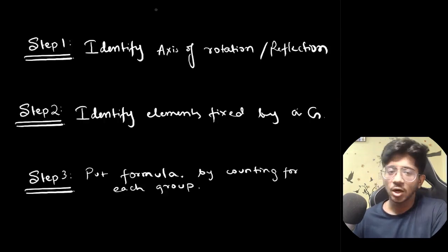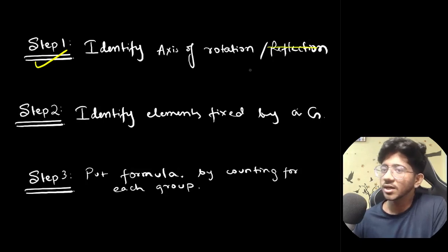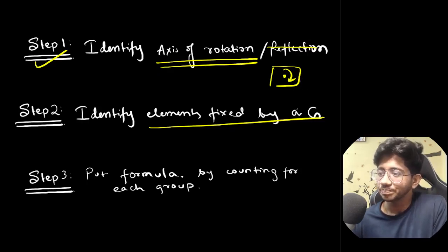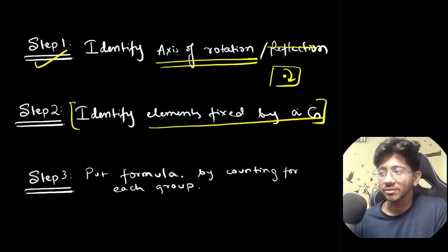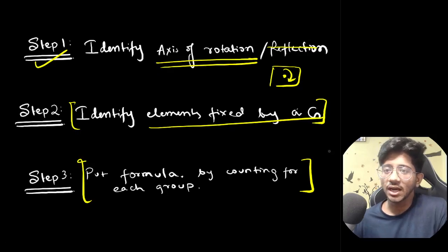Let's analyze how we solve Burnside Lemma problems using three steps. Step one: identify the axis of rotation or reflection — we don't have reflection here, so we only consider rotations. Step two: identify the elements fixed by each group element. Step three: for each rotation, count the fixed colorings, sum them up, and divide by the total number of group elements — that gives the final answer.